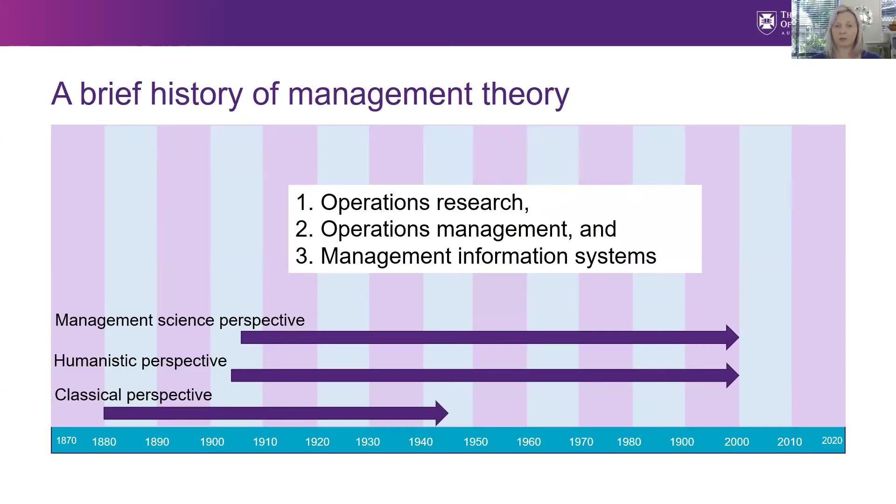The human relations movement was based on the idea that truly effective control comes from within the individual worker rather than from strict or authoritarian control. The human resources perspective combines prescriptions for the design of job tasks with theories of motivation. In this view, jobs should be designed so that tasks are not perceived as dehumanizing or demeaning, but instead allow workers to use their full potential. Two of the best-known contributors to the human resources perspective were Abraham Maslow and Douglas McGregor.